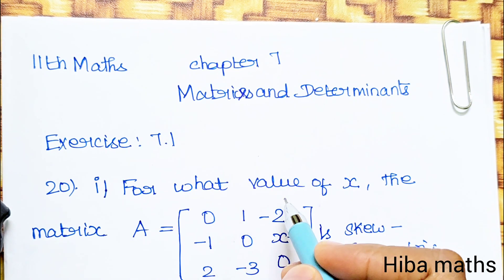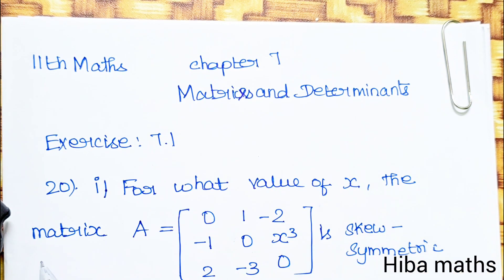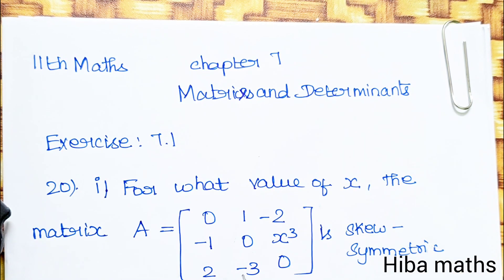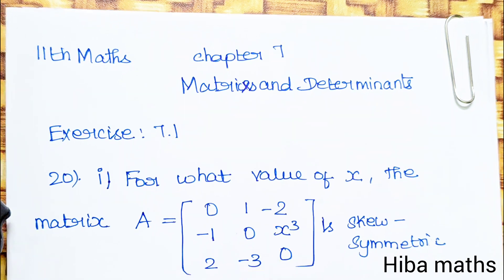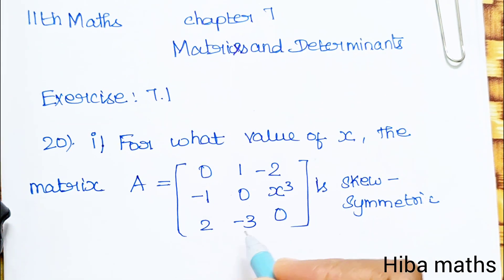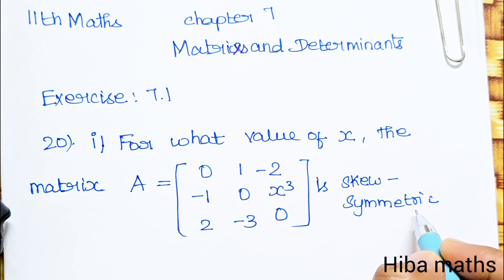For what values of X is the matrix A equal to [0, 1, -2; -1, 0, X³; 2, -3, 0] a skew-symmetric matrix?